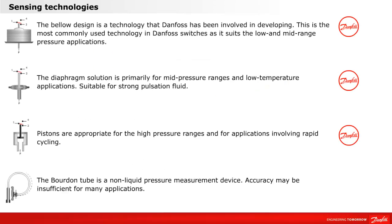Here are four of the most common technologies used in pressure and temperature switches. Danfoss uses three of these element types: bellows, diaphragm, and spring-loaded piston. These are indicated by the Danfoss logo.